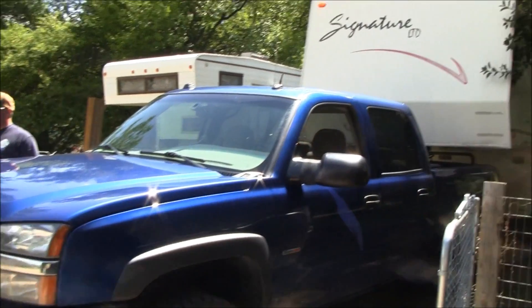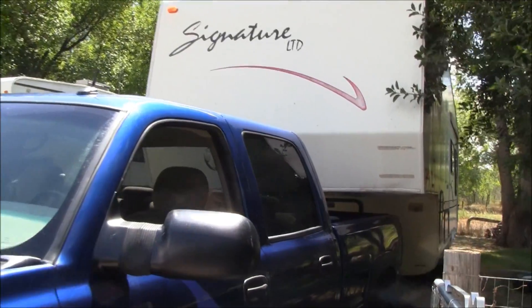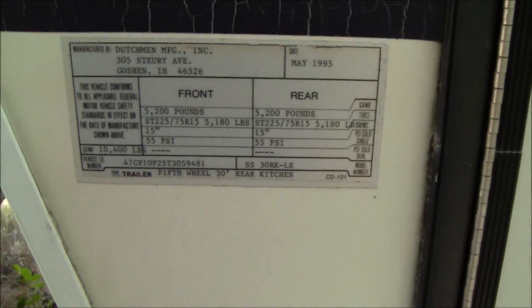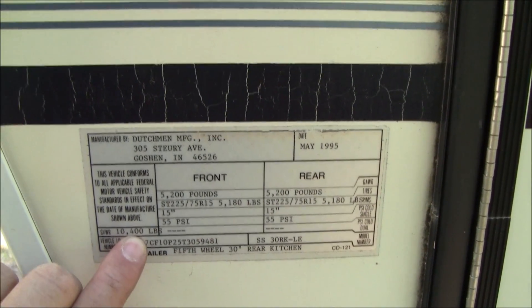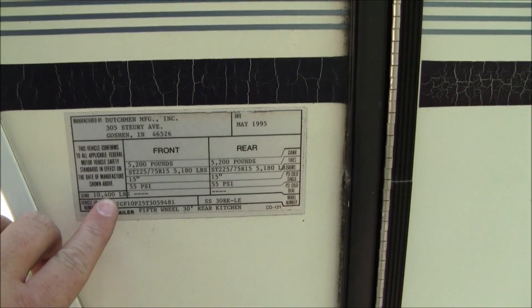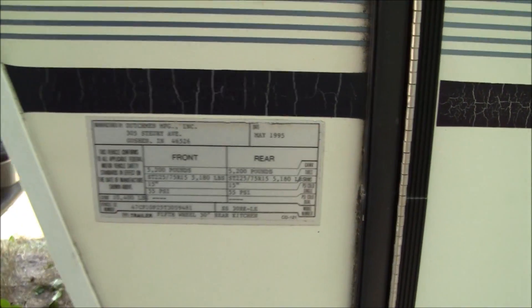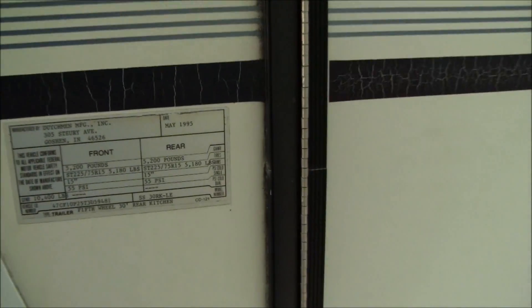Alright, we're fixing to go on a trip here with the old fifth wheel. The gross weight of this thing is 10.5 unloaded. So it's at least 11 with water. 11 or maybe more.